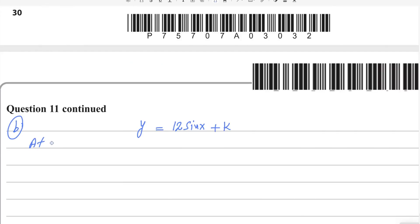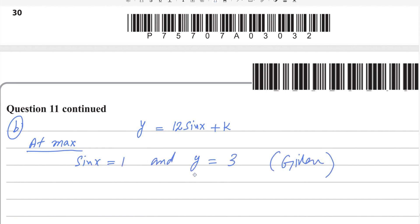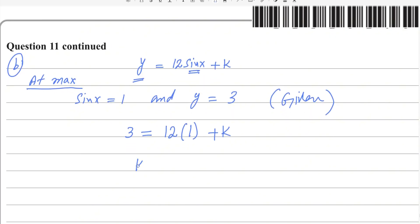At maximum, sin x equals 1, and y is given as 3. Substituting these values: 3 equals 12 times 1 plus k. So the value of k equals 3 minus 12, which gives k equals negative 9. Therefore the function is y equals 12 sin x minus 9.